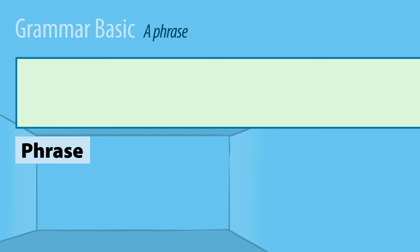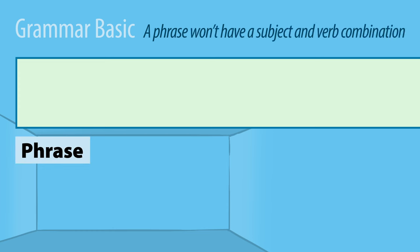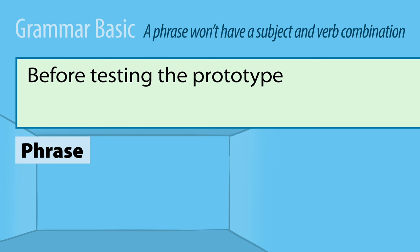Now a phrase. It feels incomplete and won't have a subject-verb combination. Consider: before testing the prototype. This group of words has a verb, testing, and a noun, prototype. But the prototype isn't a subject — it's not doing the testing. So this group of words is just a phrase because it doesn't have a subject-verb combination that conveys a complete idea.